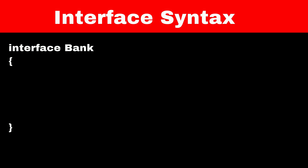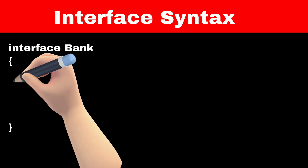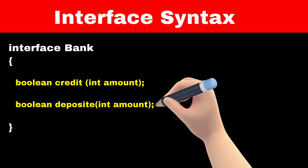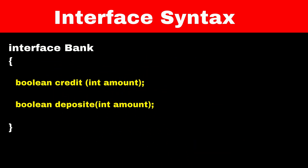The rest of the syntax will be like defining a normal class and normal methods. Every bank should have the credit and deposit feature, so we have to declare the credit and deposit functions in our interface.